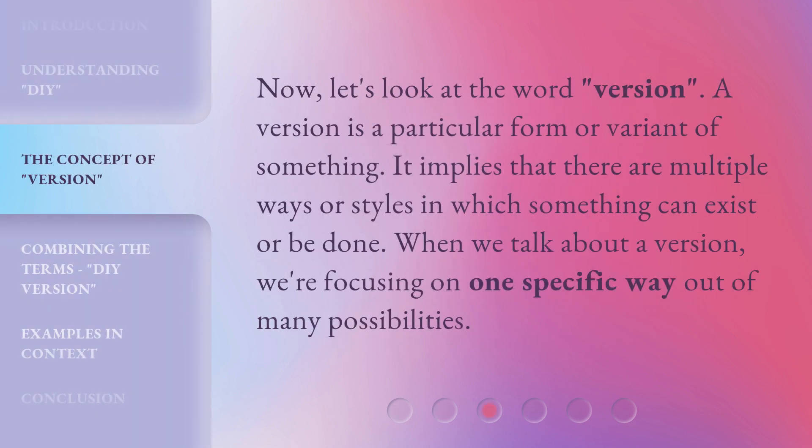Now, let's look at the word version. A version is a particular form or variant of something. It implies that there are multiple ways or styles in which something can exist or be done. When we talk about a version, we're focusing on one specific way out of many possibilities.